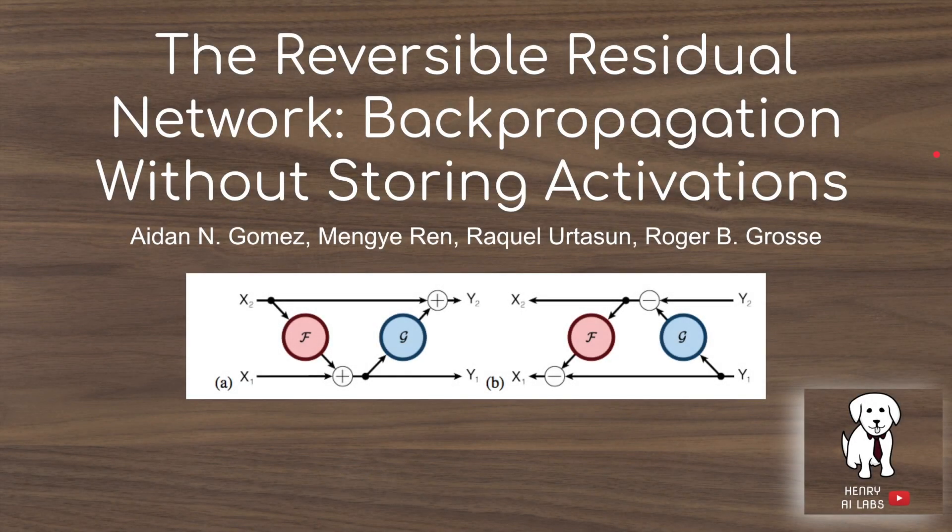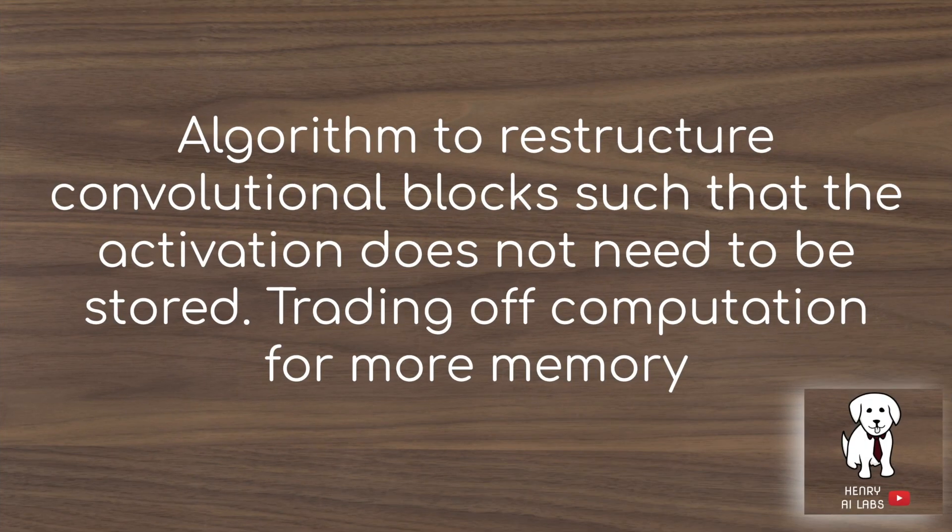This video will explain the reversible ResNet architecture, the RevNet. The key idea here is to do backpropagation without storing the intermediate activations. So the headline is that the RevNet is an algorithm to restructure convolutional blocks such that the activation doesn't need to be stored.